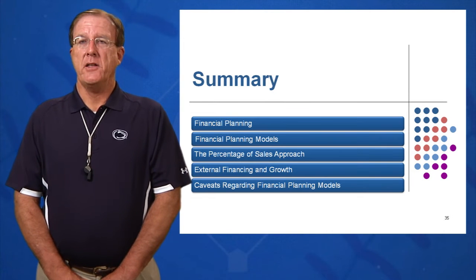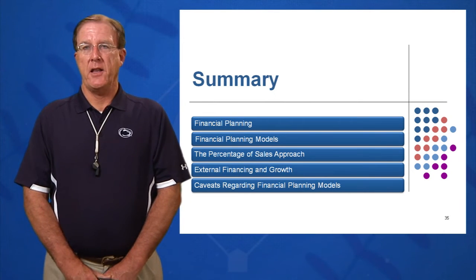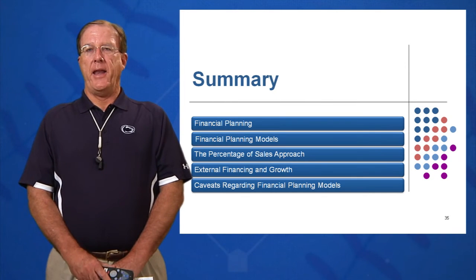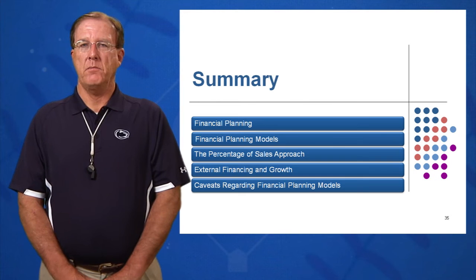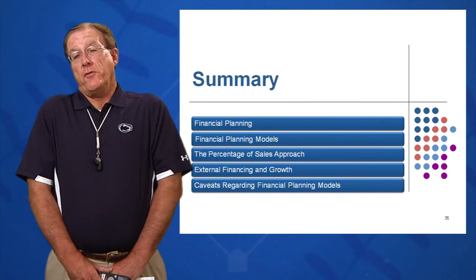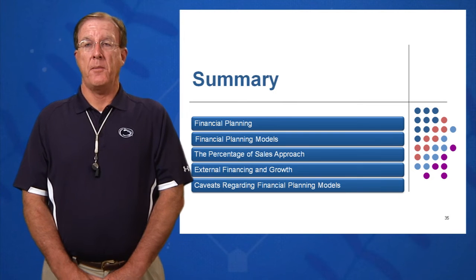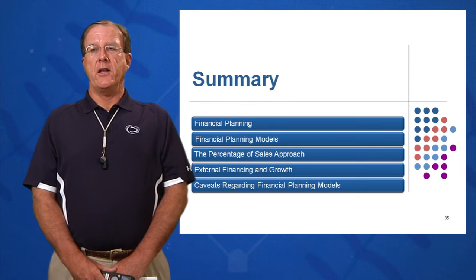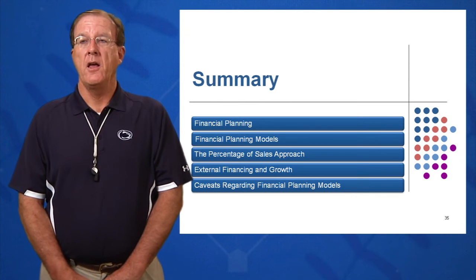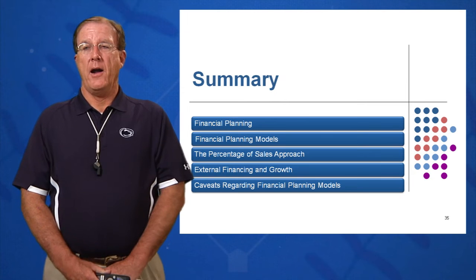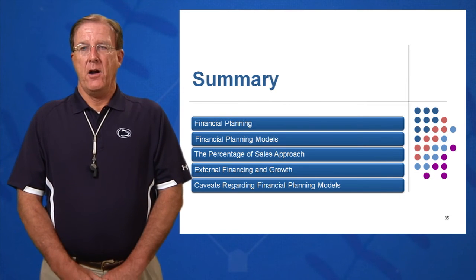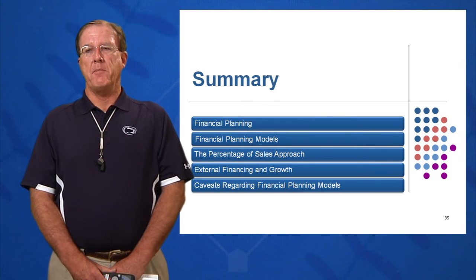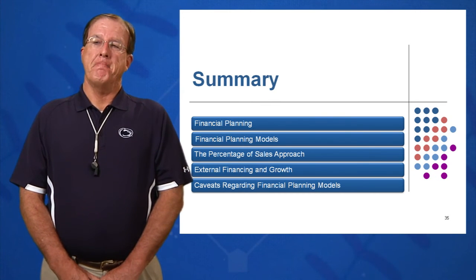In summary, we've looked at five key learning objectives at the end of this session. You should be able to know what a financial plan is and why we do financial planning in most major businesses. Whether you go into business on your own or work for a small, medium, or large corporation, you're going to do financial planning. Financial planning models are out there, and there are six key ingredients you should know in order.